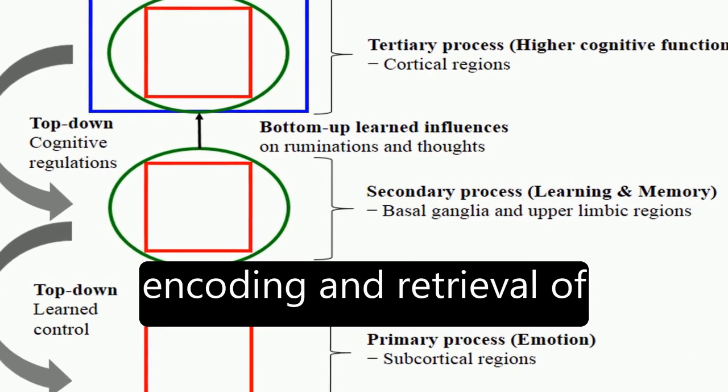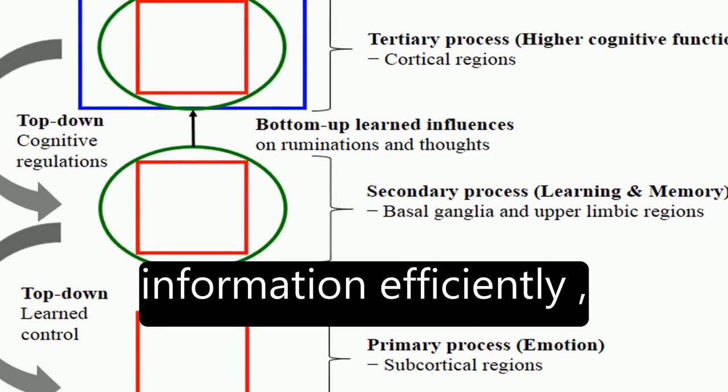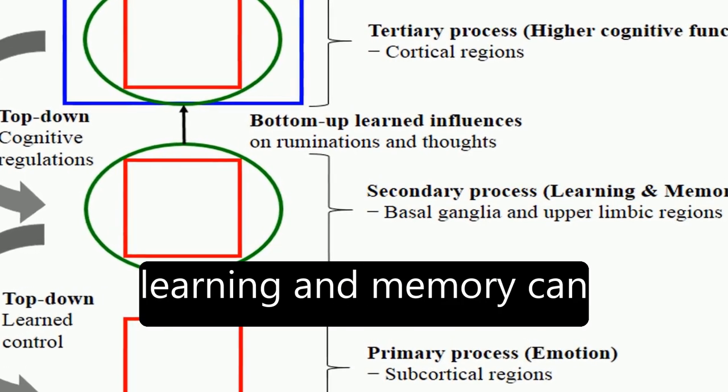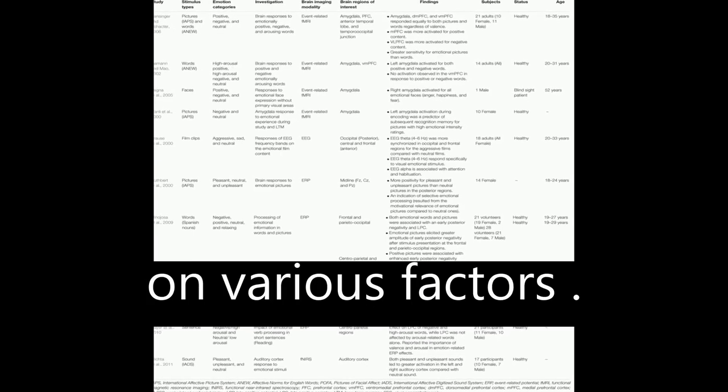Emotion facilitates encoding and retrieval of information efficiently, but its effects on learning and memory can be univalent, depending on various factors.